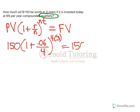This gives us 150 times 1 plus 0.015, because it's 1.5% per quarter to make up 6% per year, to the power of 12, because there's 12 quarters in those 3 years.